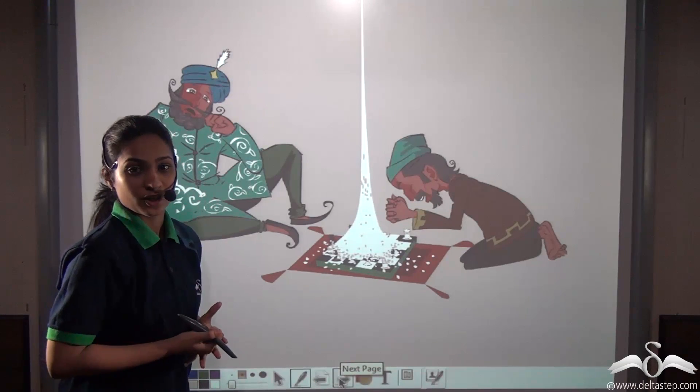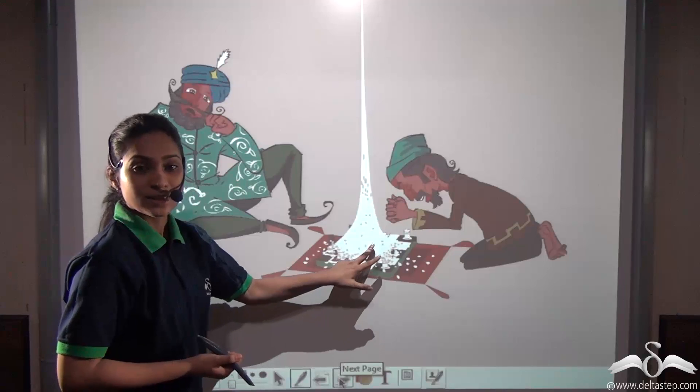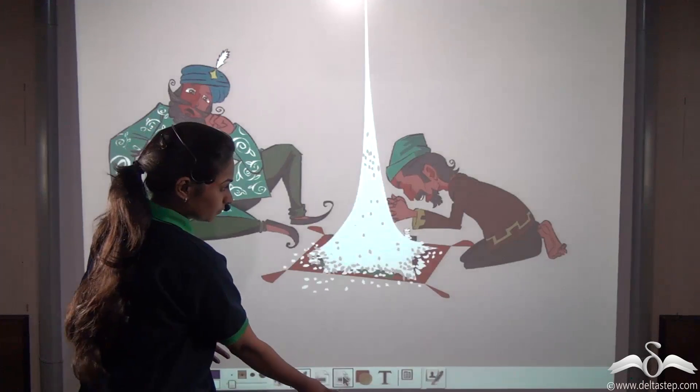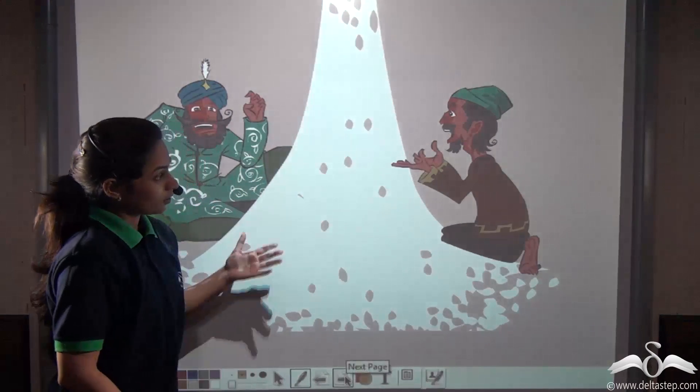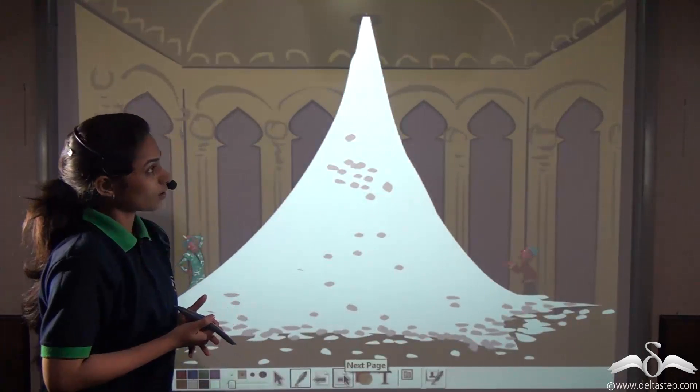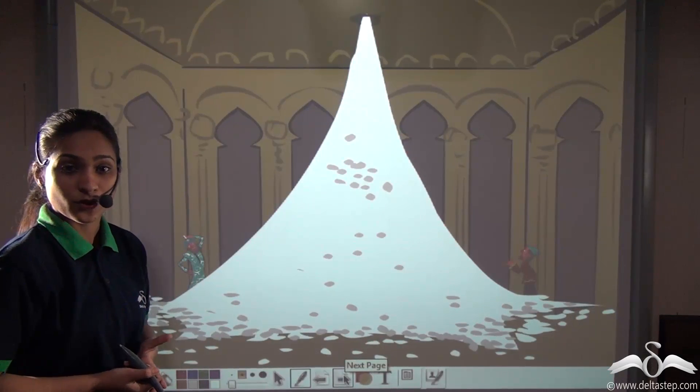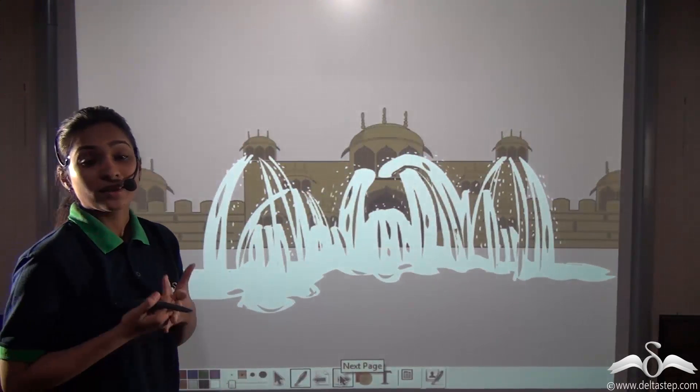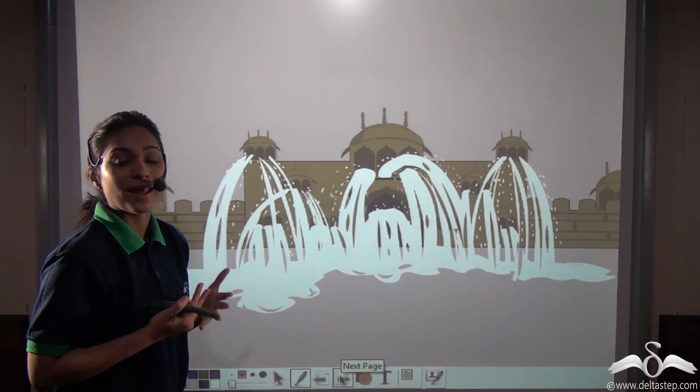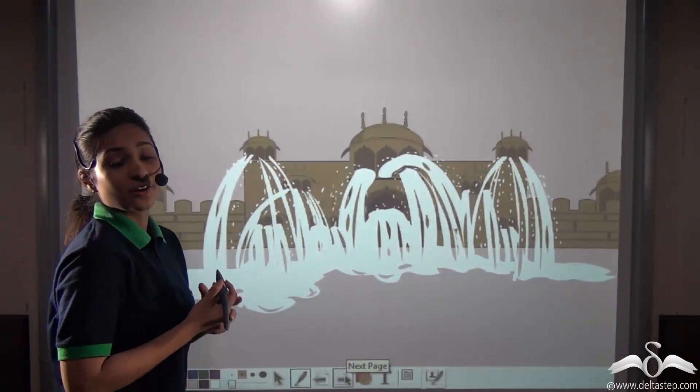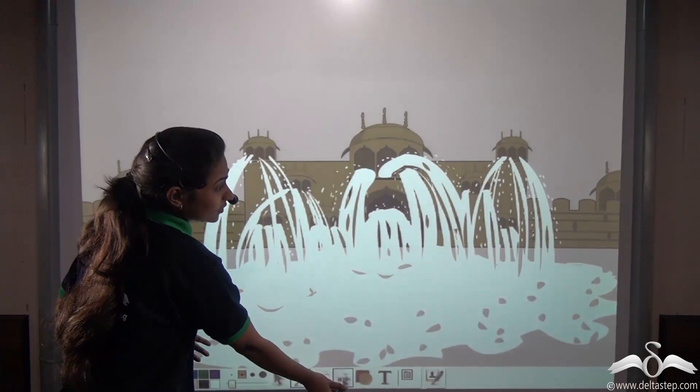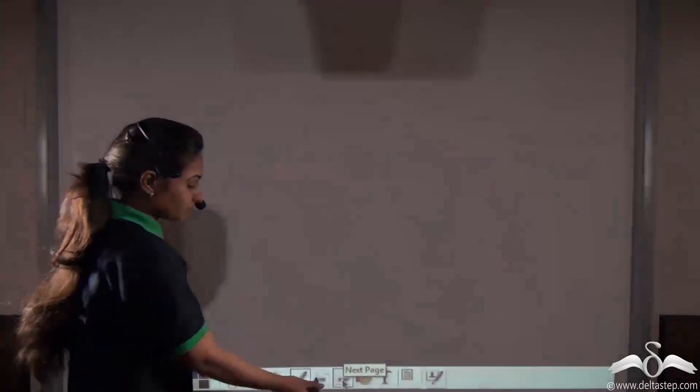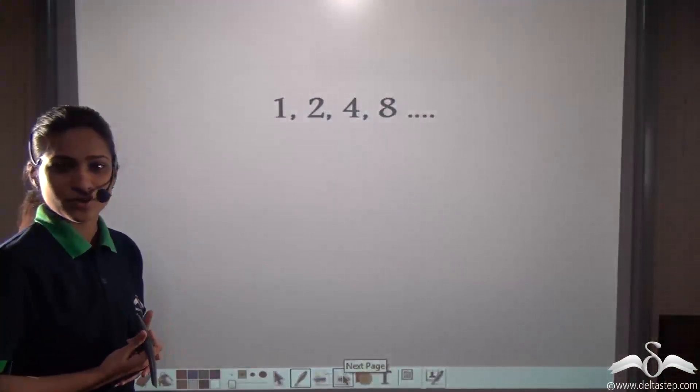But what happened next was astonishing. The emperor saw that by the time seventeen square was reached, the whole room was filled up. Really? See, the number of grains are increasing. And by the time twenty-six square was reached, the whole room was filled up. And when forty-two squares were accounted for, the whole palace was filled with rice. In fact, the reward would add up to an astronomical sum far greater than all the rice that could be produced in many many centuries. Interesting, the story was really interesting.